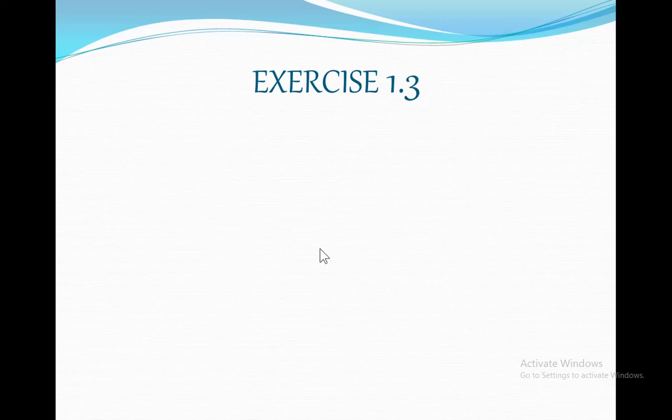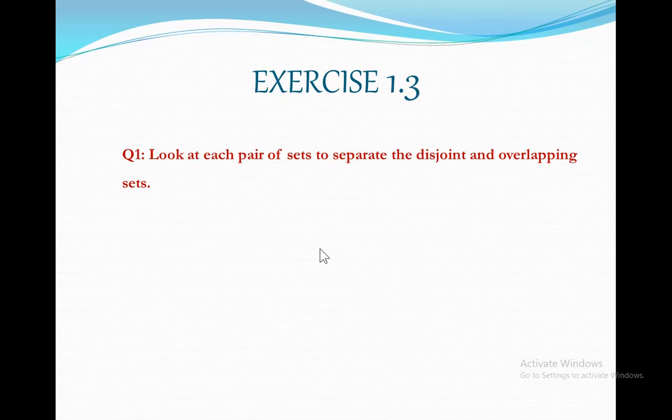Next we have one more part from exercise 1.3, question number 1. Statement is same that you are to separate the disjoint and overlapping sets. We have part number 4: E is equal to set of even numbers, O is equal to set of odd numbers.